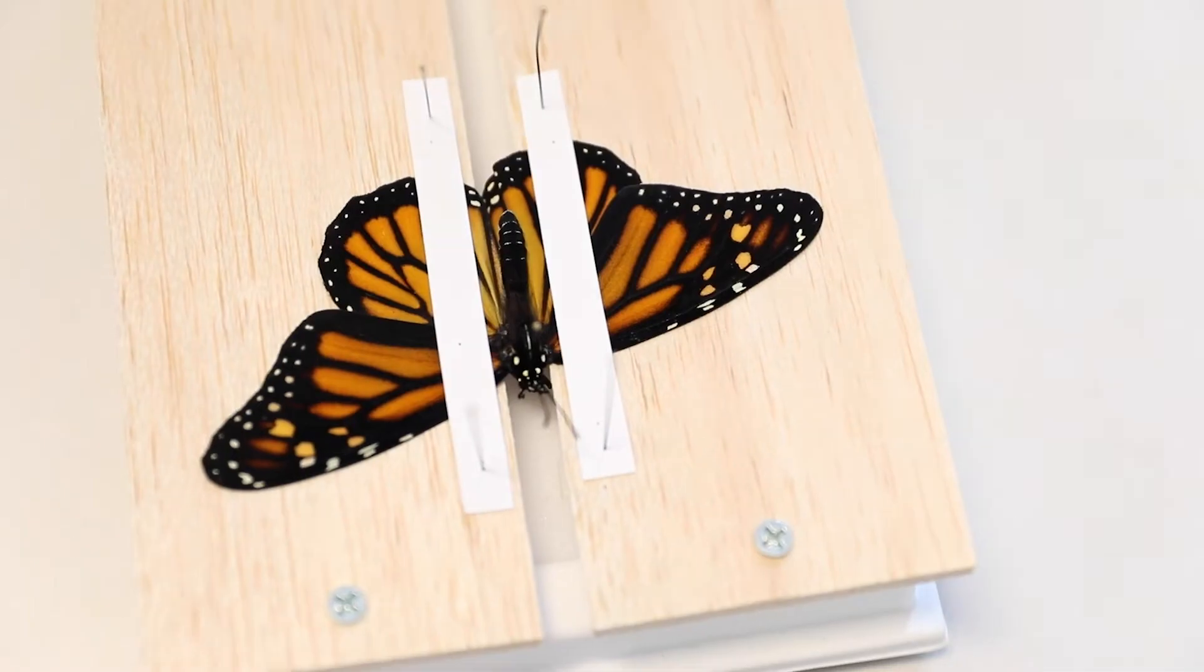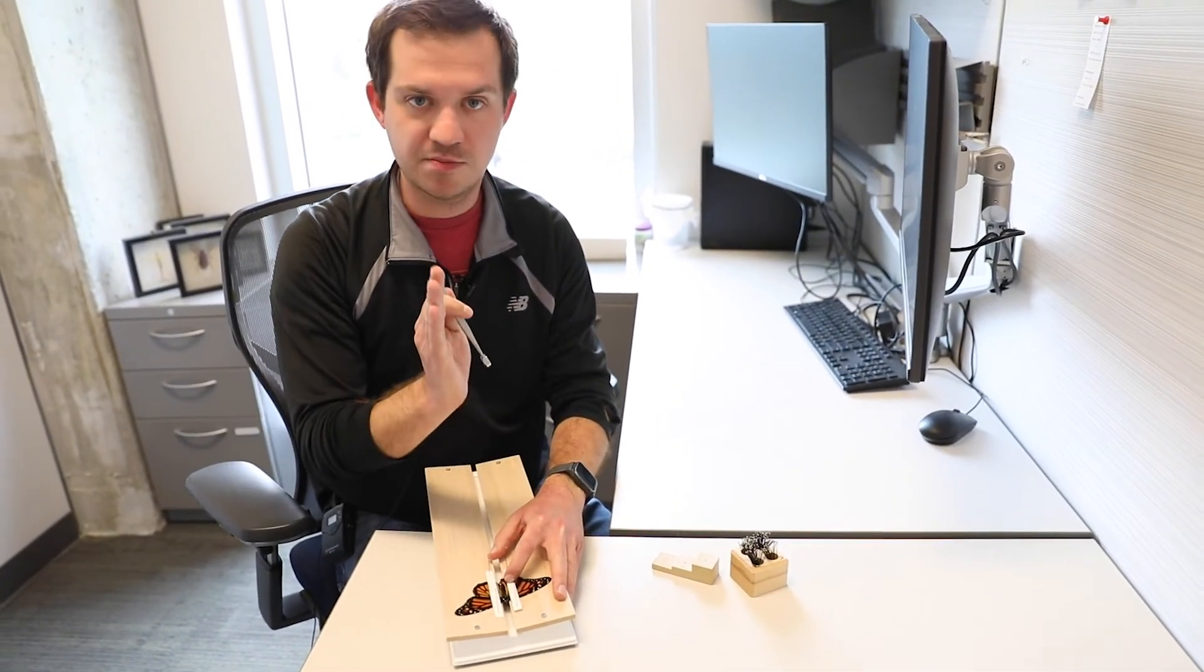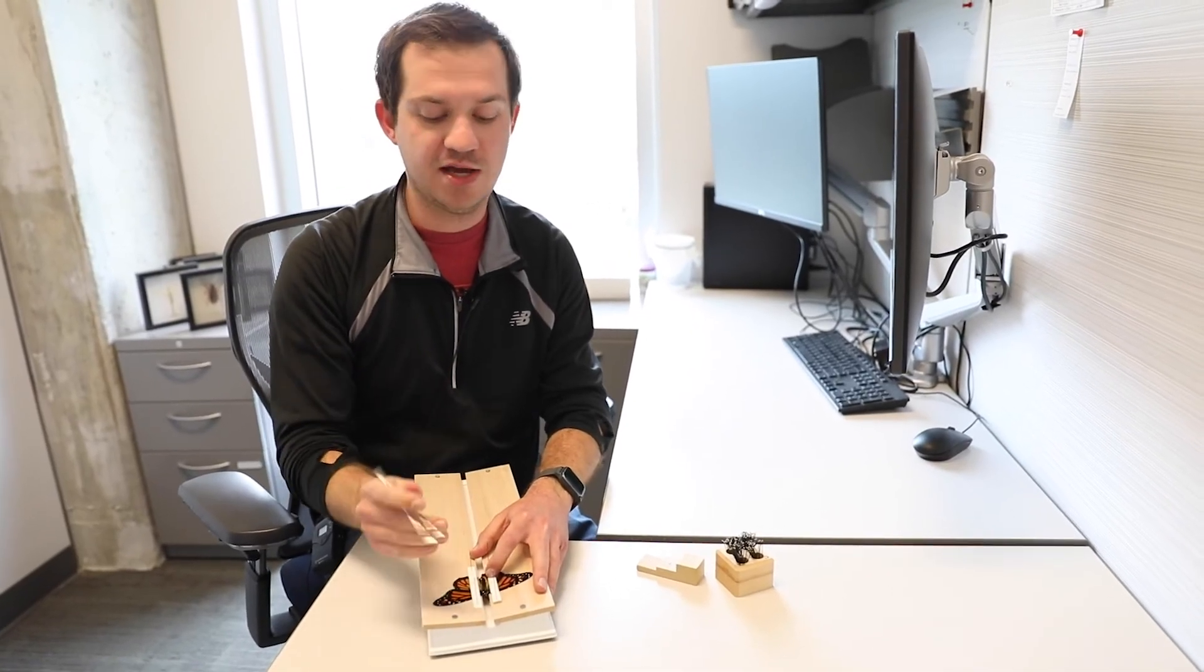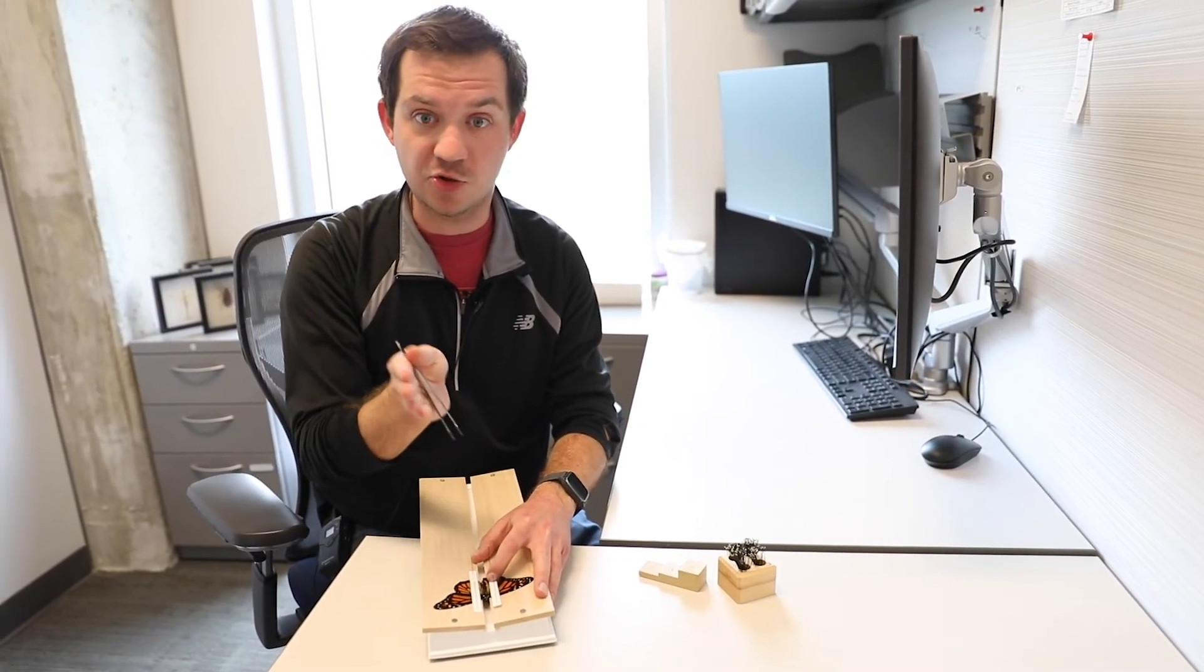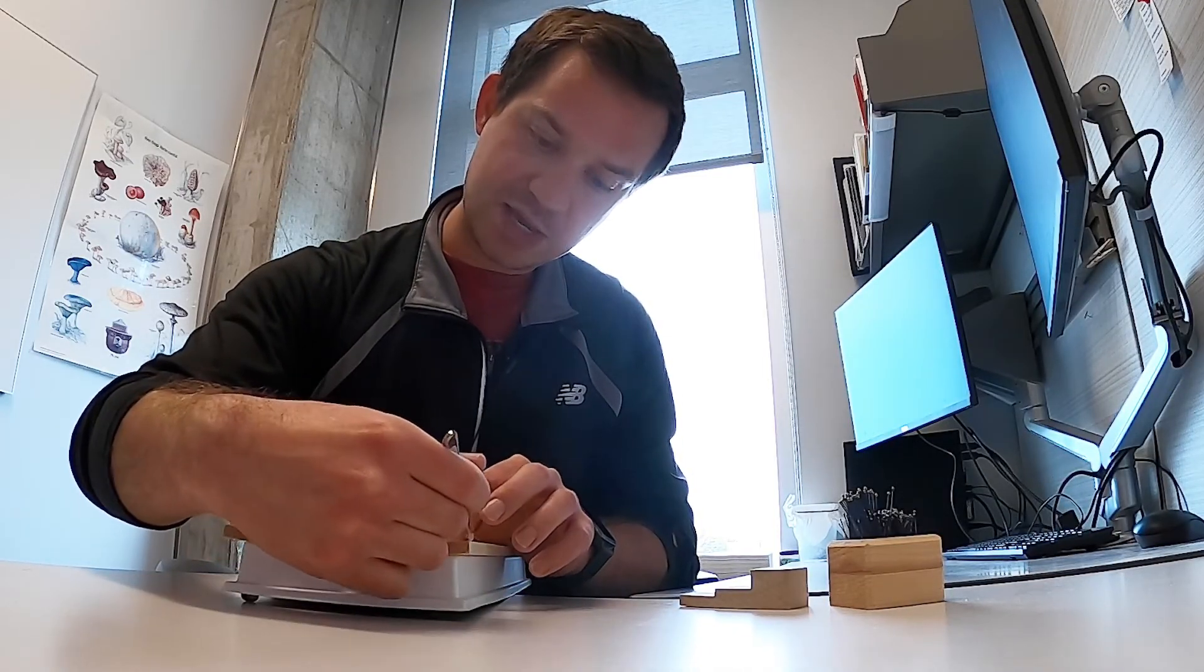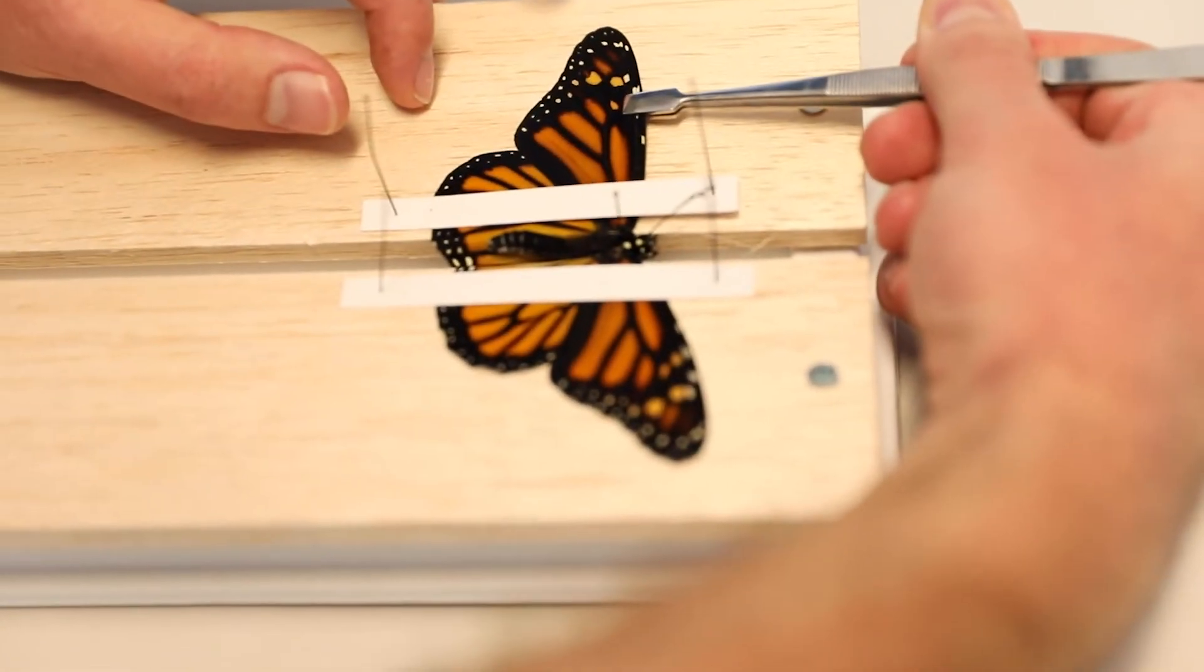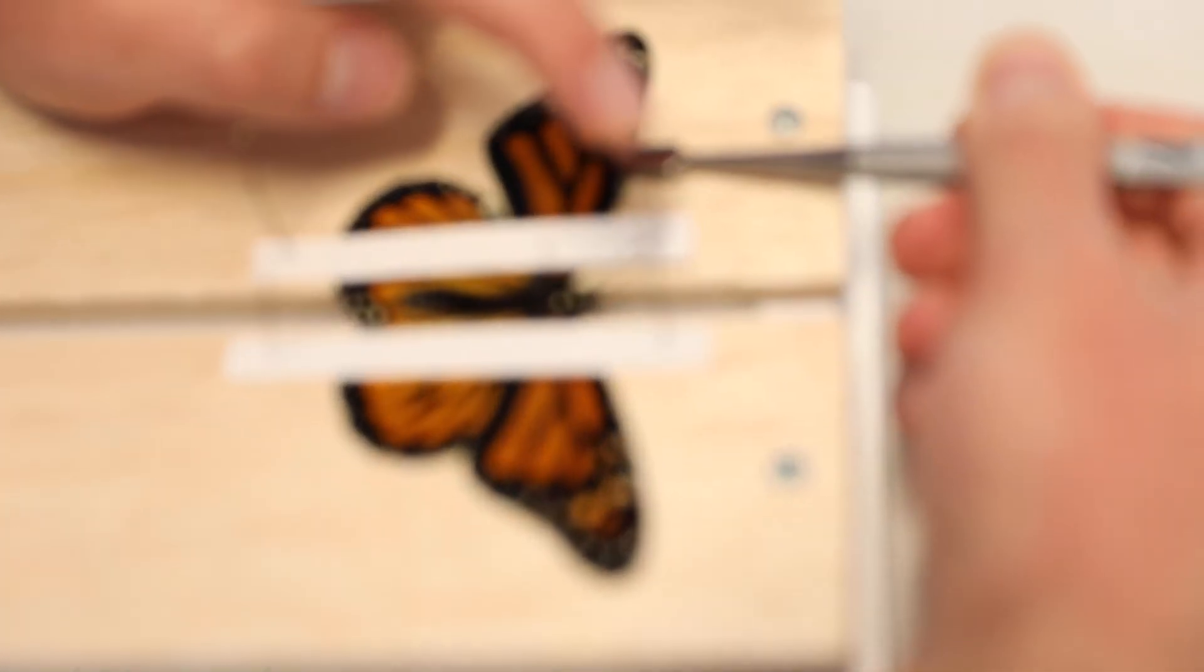From this point you do the same exact thing for the left side. Sometimes there are some fine adjustments that you have to make to ensure both sides are even. I'm just going to release pressure from that front wing, gently get my forceps underneath it, grab it by that top vein, and slowly move it up until it matches the other side, at least as close as I can tell. Push that pressure down again and I can release.